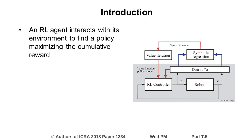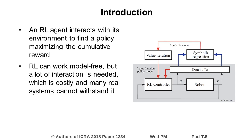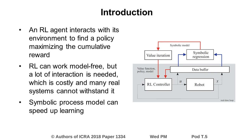An agent in reinforcement learning optimises its behaviour by interacting with the environment in order to find an optimal policy which maximises the long-term cumulative reward. Although reinforcement learning can work in a completely model-free fashion, the absence of a model requires a lot of interaction with the system, which is costly and many real systems cannot withstand. To speed up learning, we propose to use symbolic regression to find process models of unknown systems.